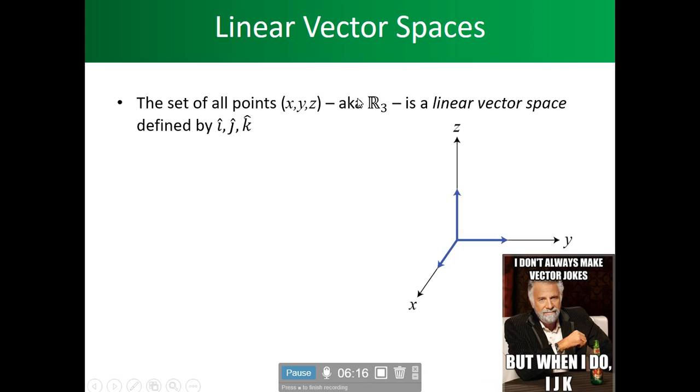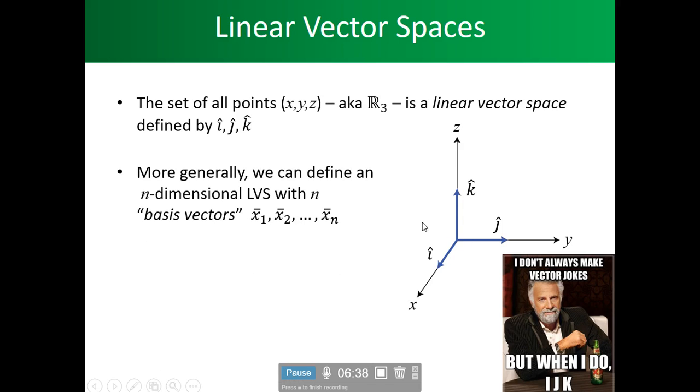So as you can see here, we have our x and our y and we have our i, j, k. As it has a dimension, these are the dimensions, i, j, k, and here we have what the x value is, the scalar for that. More generally, we can define an n-dimensional linear vector space with n basic vectors.